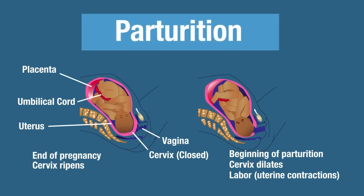Beginning with the events of parturition, we're going to first start at the end of the pregnancy where the cervix ripens. When you think about ripening, think about a fruit. When a fruit ripens, it gets softer — like a peach. As the peach ripens, it gets really soft. The cervix gets really soft, and what's happening is that you have enzymatic breakdown of the tissues in that area.